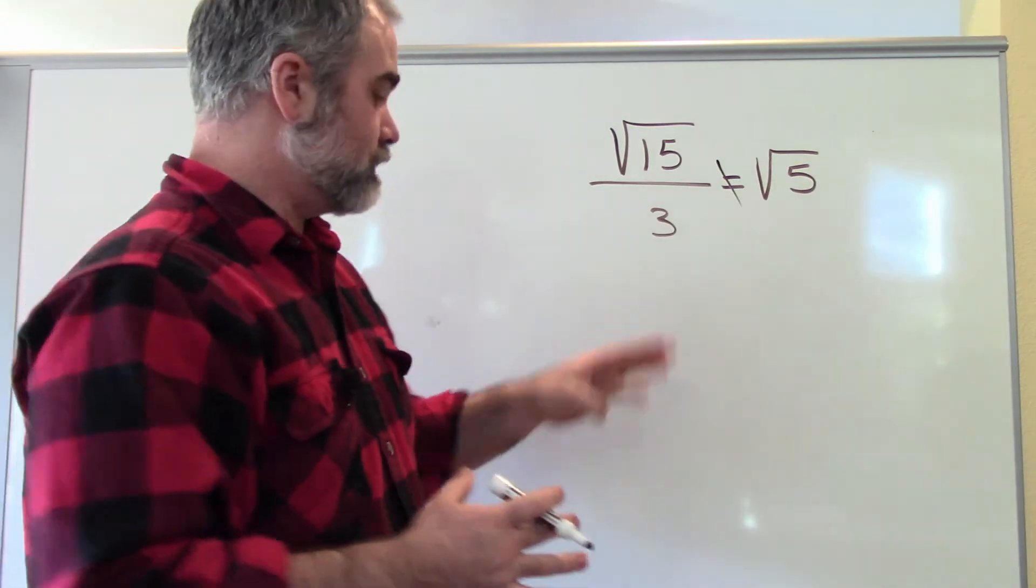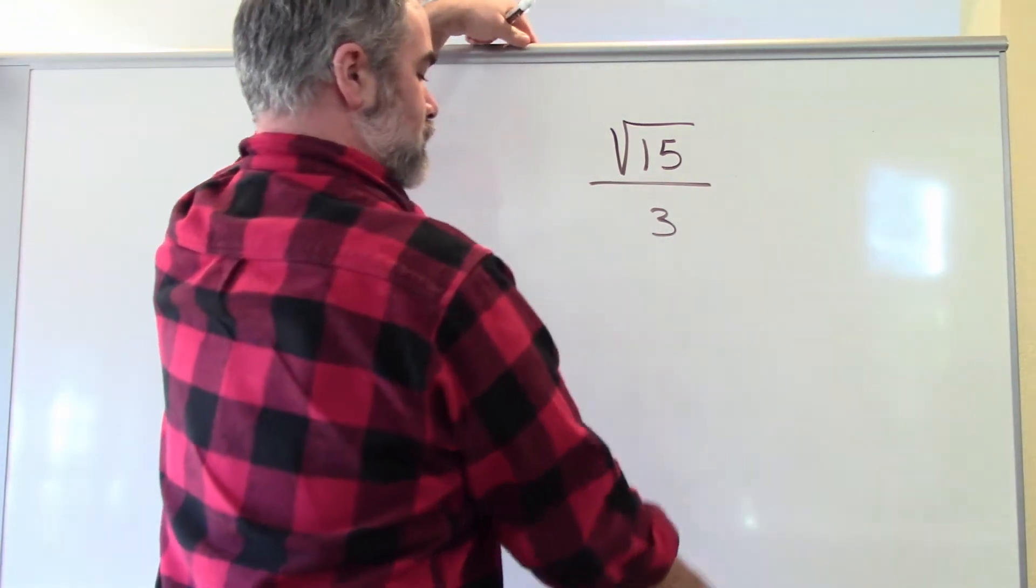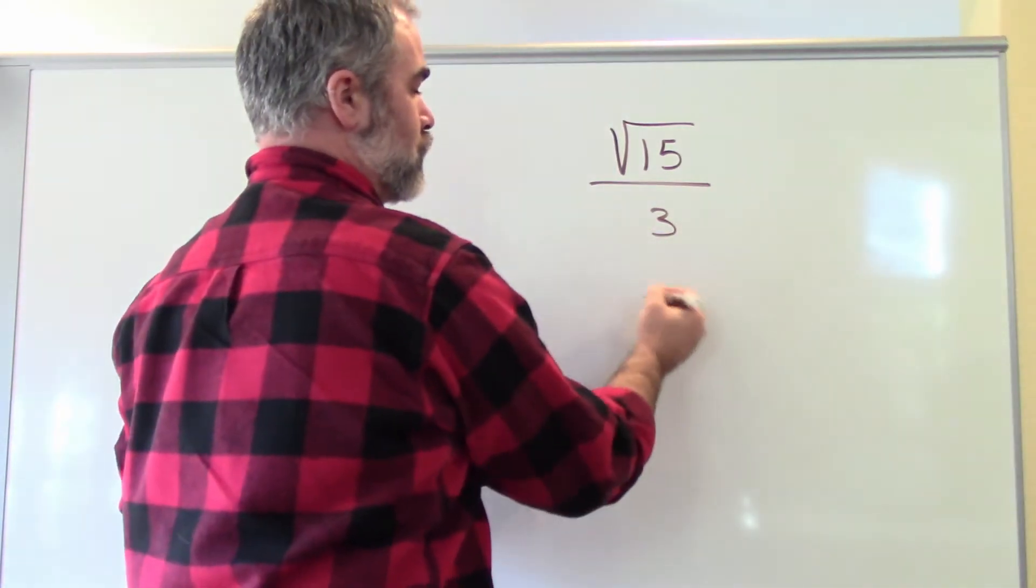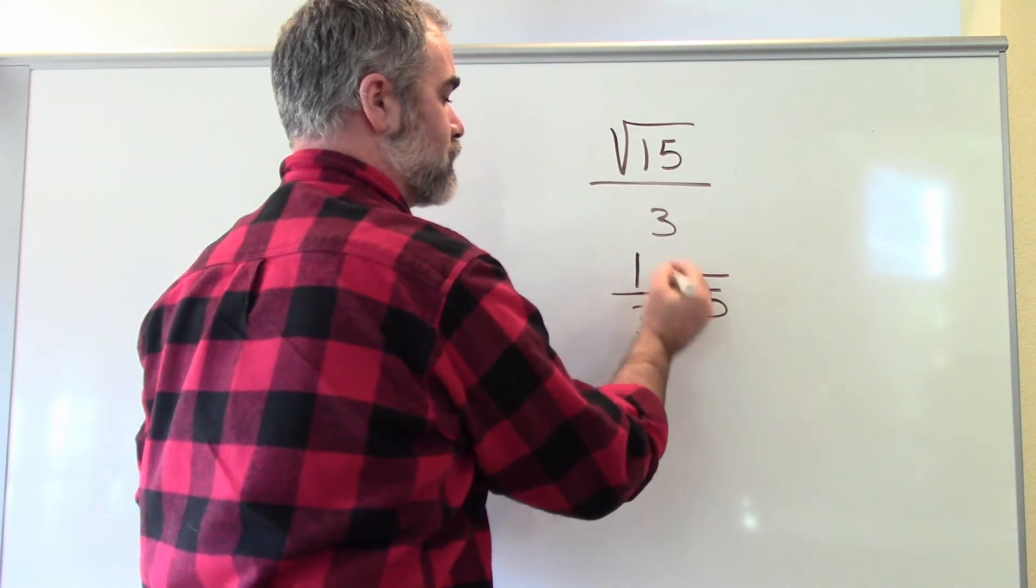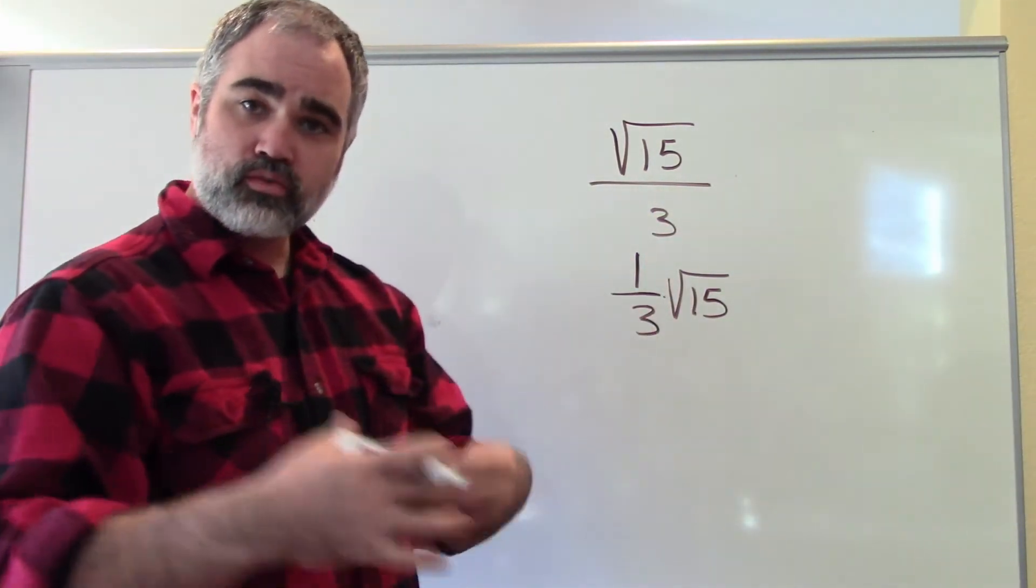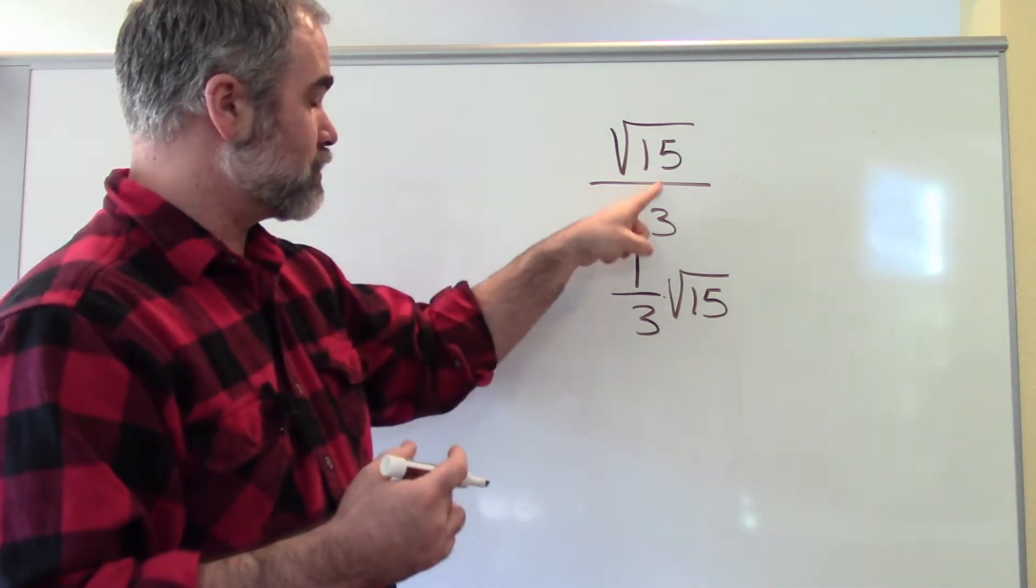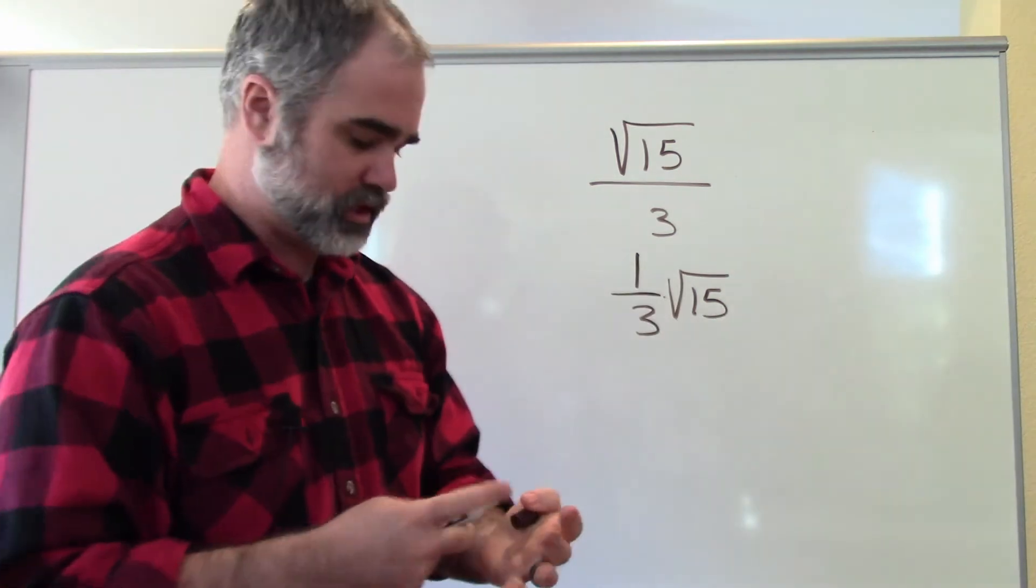You could also write this, if you have a number here, you could change this to multiplication. You could change this to one third times the square root of 15 as well. These are the same. But I can't combine integers, regular numbers with square root numbers. They're completely different kinds of numbers, just like variables. You can't put them together.